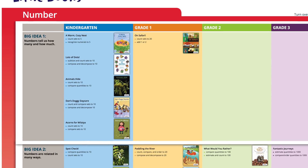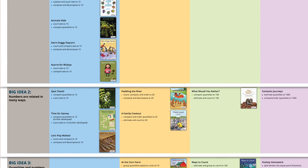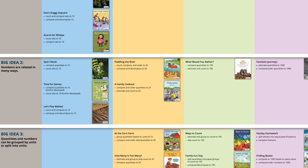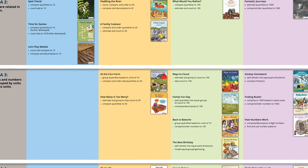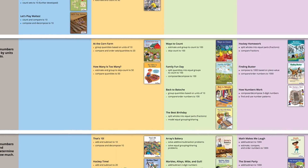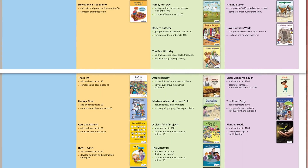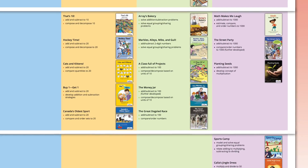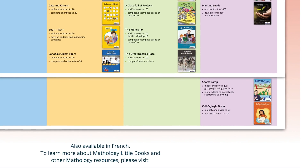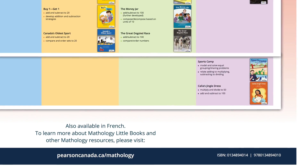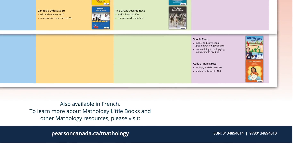The Little Books poster also shows the flow and structure of the big ideas in each strand. Initial big ideas are prevalent in early grades, gradually diminishing by grades 2 and 3. Conversely, later big ideas are typically more prevalent at the higher grades.